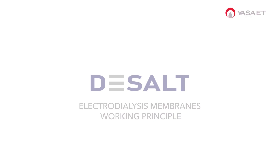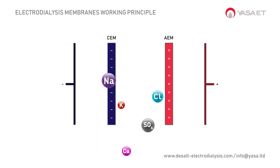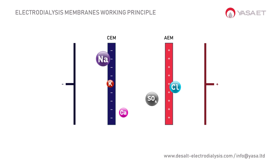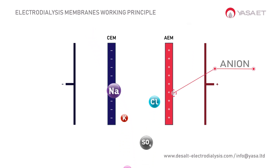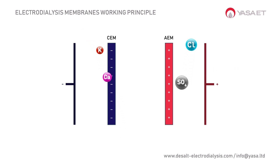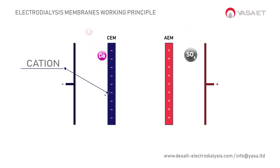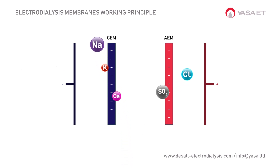In electrodialysis, ion exchange membranes selectively transport anions and cations from the feed stream under the influence of an electric field. Specifically, anion exchange membranes allow only negatively charged ions to pass, while cation exchange membranes permit only positively charged ions to move through.